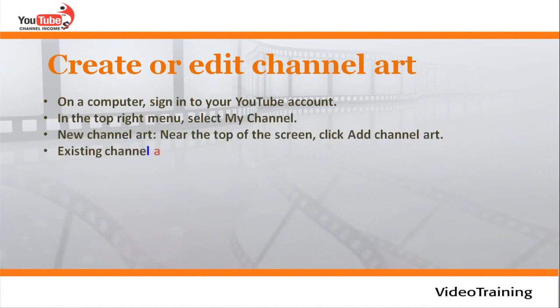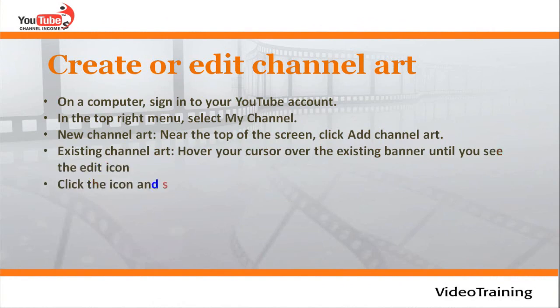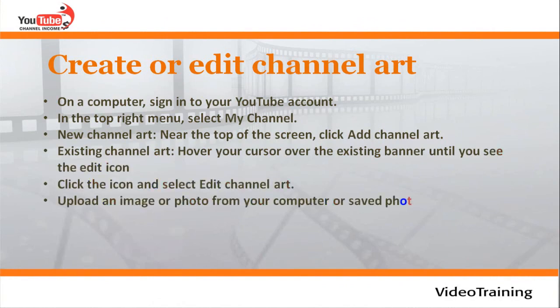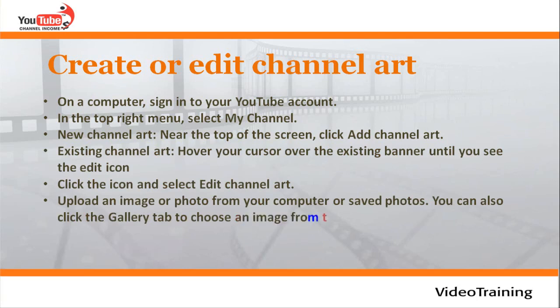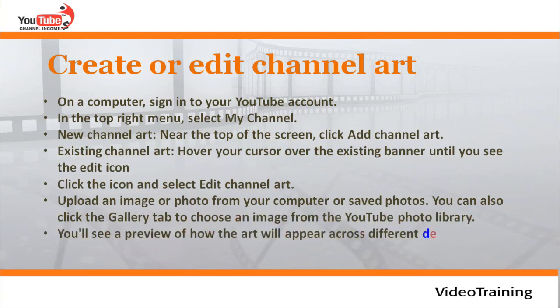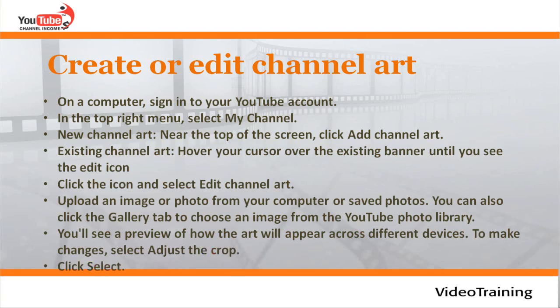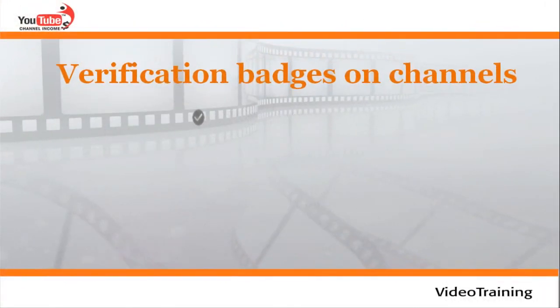In the top right menu, select My Channel. For new channel art, click Add Channel Art near the top of the screen. For existing channel art, hover your cursor over the banner until you see the edit icon, then click it and select Edit Channel Art. Upload an image from your computer, or click the Gallery tab to choose from the YouTube photo library. You will see a preview across different devices; click Adjust the Crop to make changes.